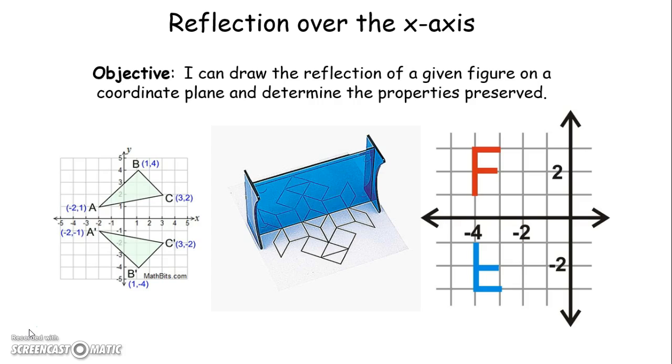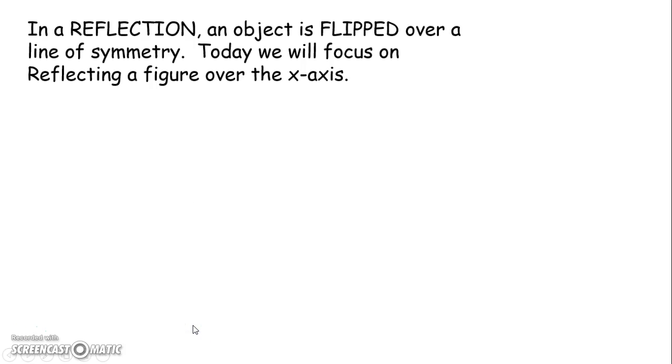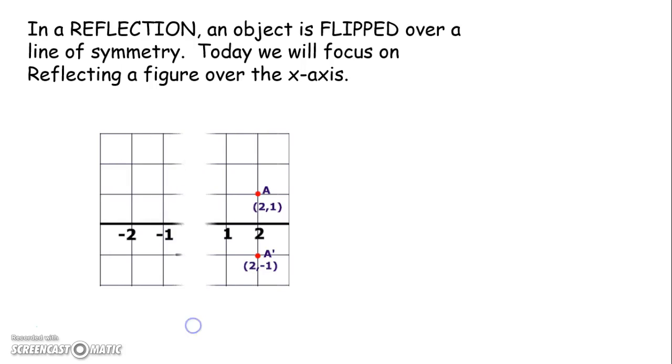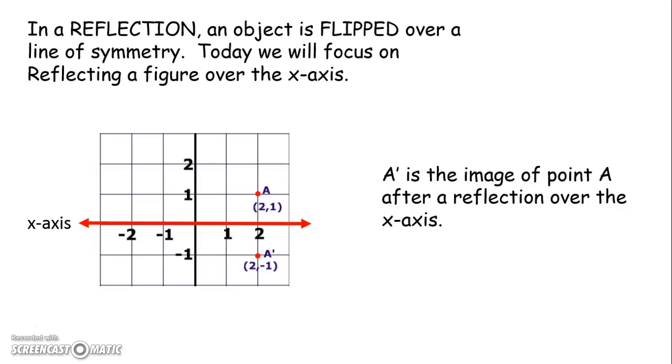And tonight, I'm just going to make sure that you have that rule. In reflection, an object is flipped over a line of symmetry. Today we're going to focus on reflecting a figure over the x-axis. So here, point A is reflected over the x-axis and the image is A prime. So it would be like if A was looking into a mirror. So if you're here and there you are, point A, that's you, like a little person. You can make yourself a little person there. And if you looked into a mirror, there you are down there. There's your little person down there looking right back up at you.